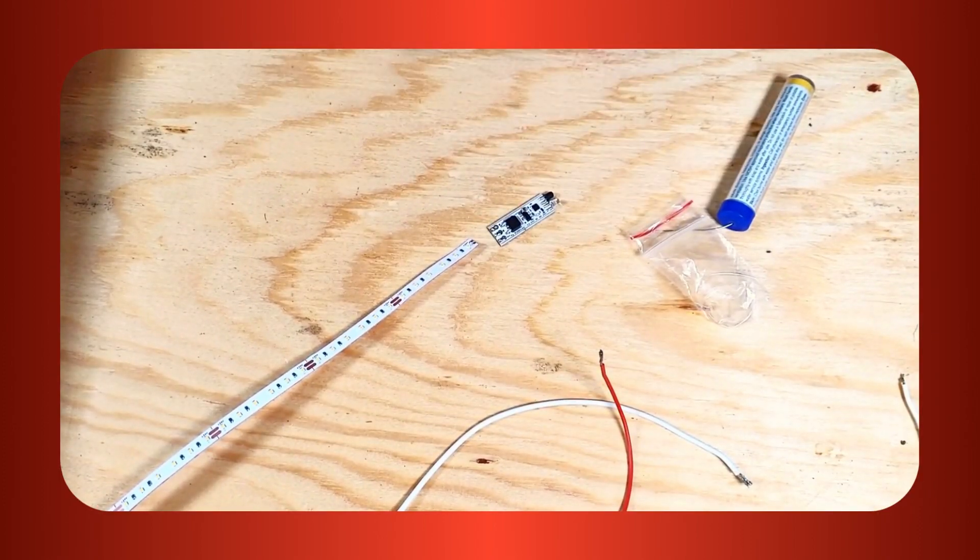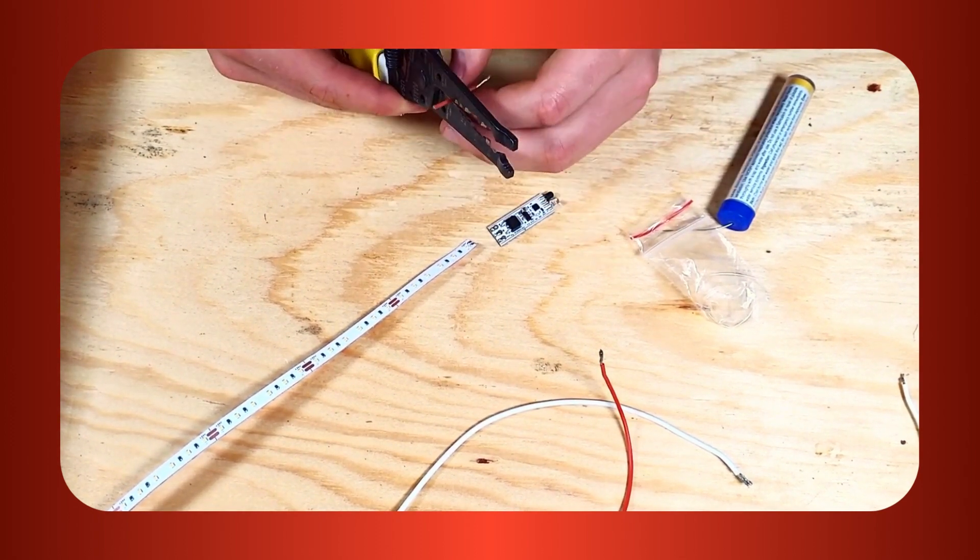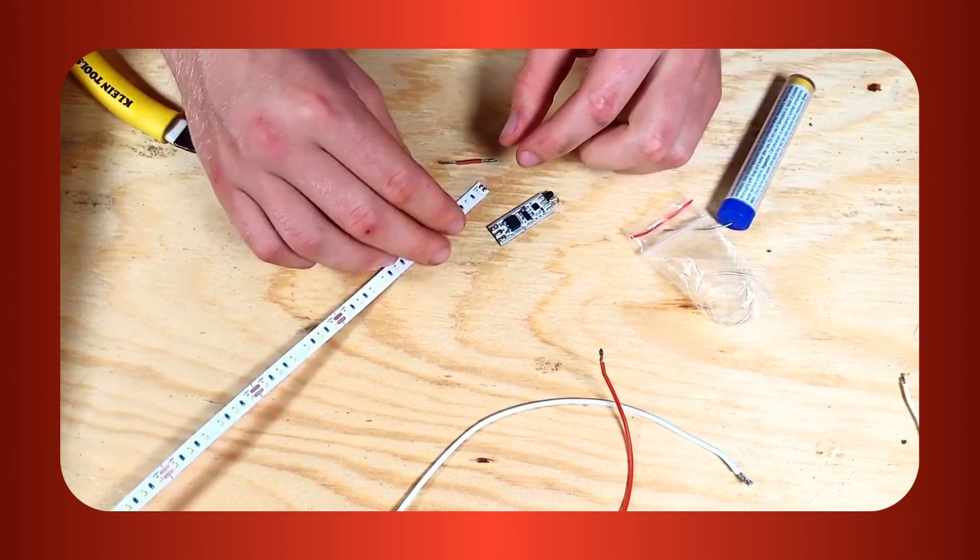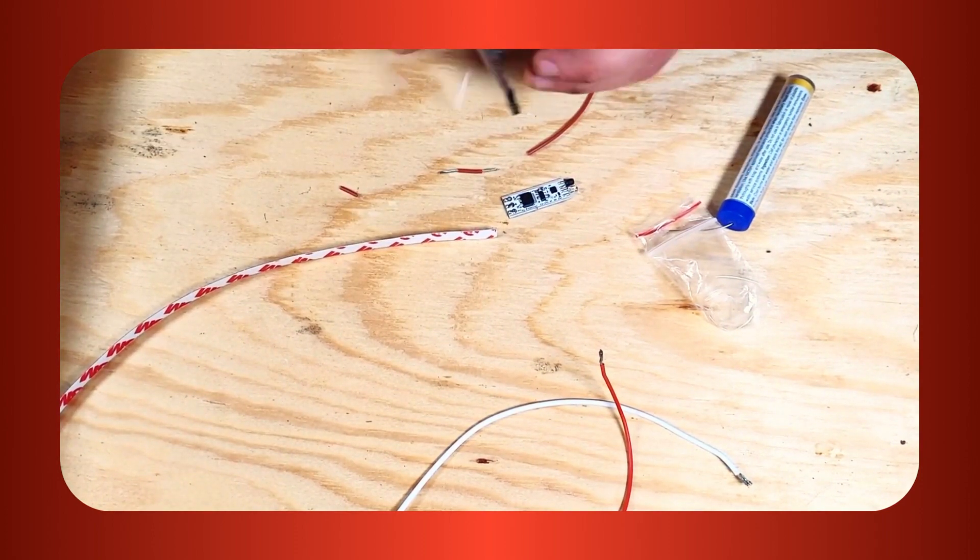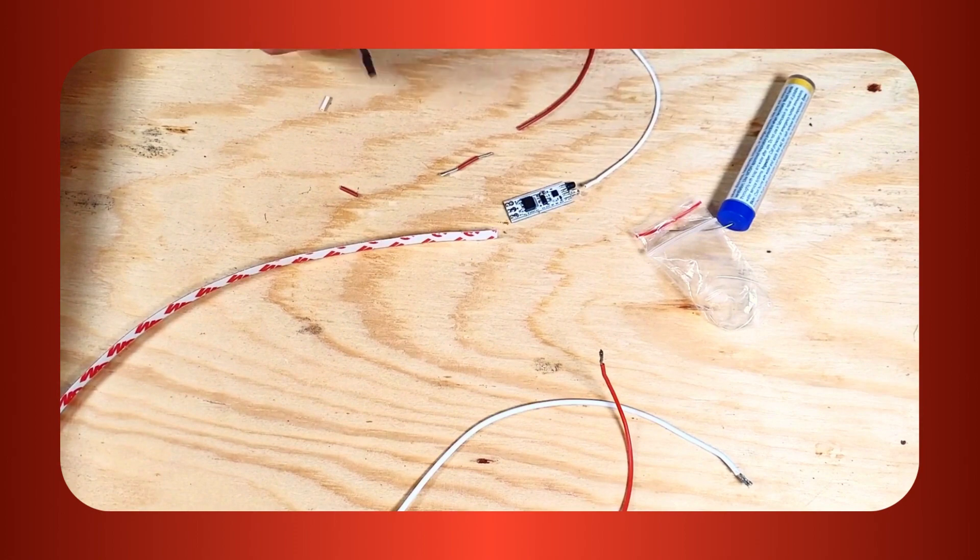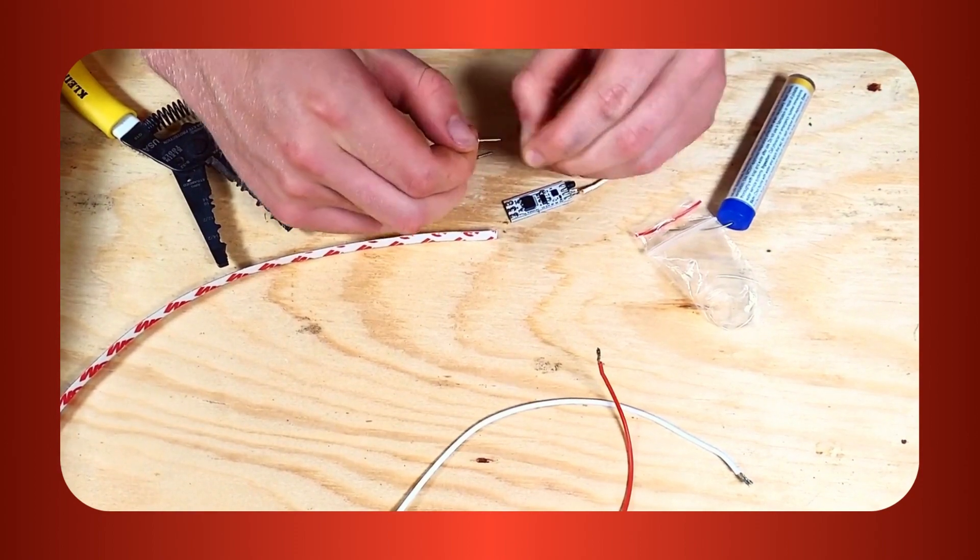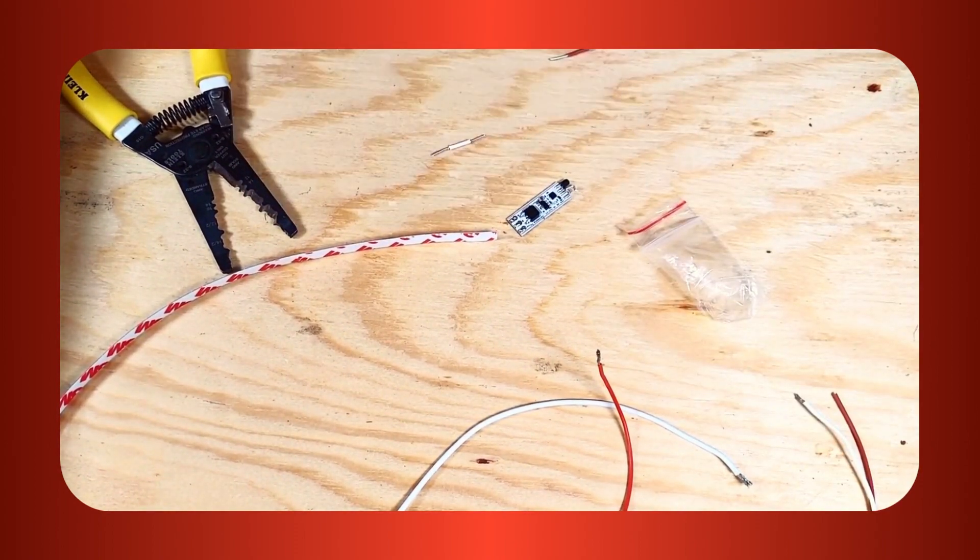Now cut a short wire to run from the positive pad on the strip to the same pad on the sensor. Cut another to run from the negative pad on the strip to the middle pad on the sensor. Once your wires are cut and stripped, twist the exposed strands and then tin them.